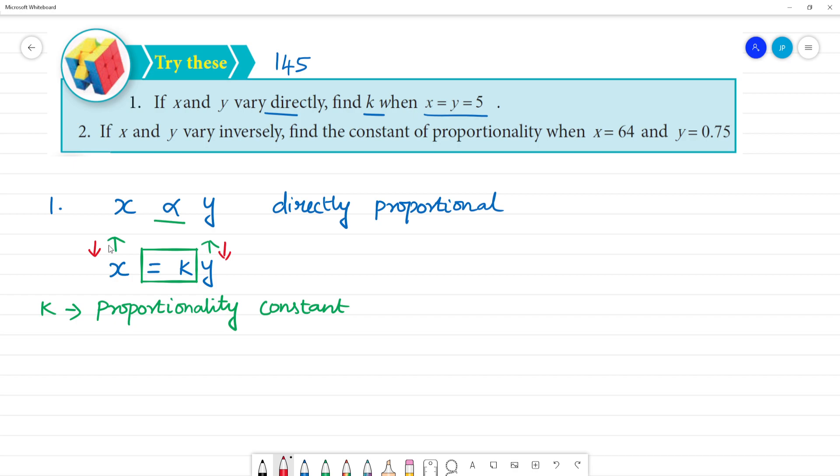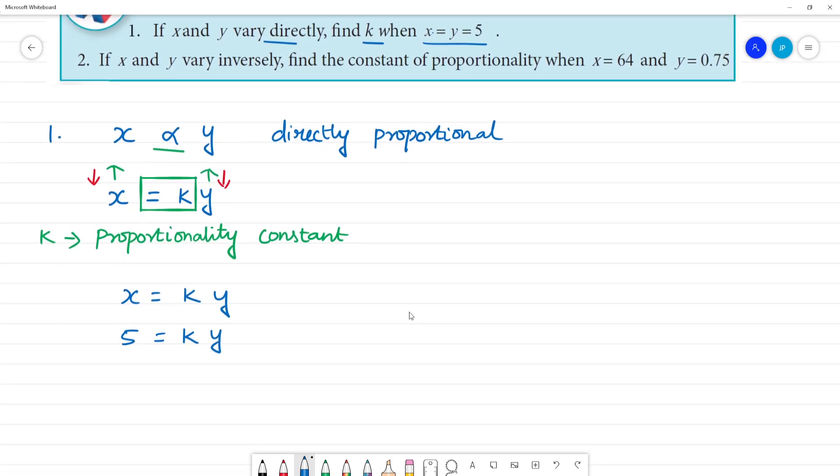Now what do we get? x is equal to k times y. So what is x here? x is 5, y is 5. So 5 equals k times 5. So what is k? 5 divided by 5 is equal to k. Now what is k? Cancel and k is equal to 1.